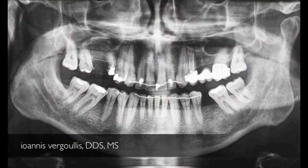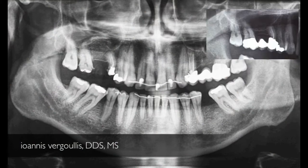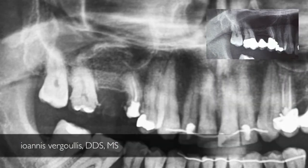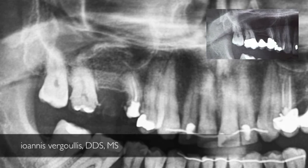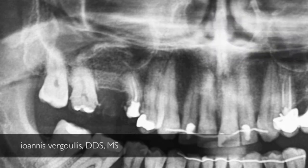Six months later, you can see that we were able to grow a good amount of bone vertically, so we can proceed with implant placement. At that point we remove number 15 and immediately place a Legacy 3, 4.2 by 10 millimeter implant on the number 15 site, and the same size implant on the number 16 site.